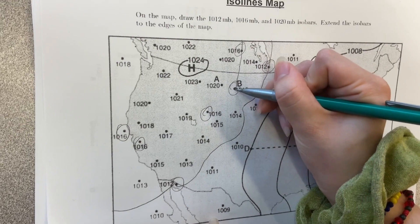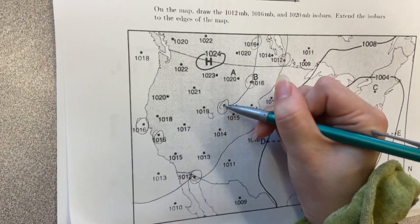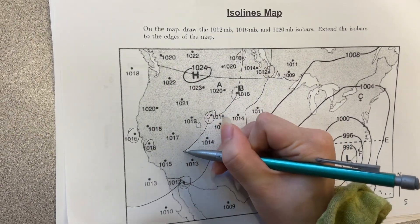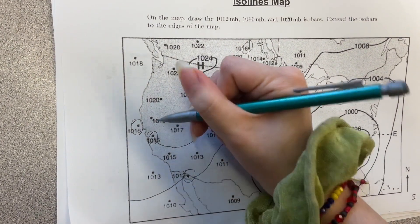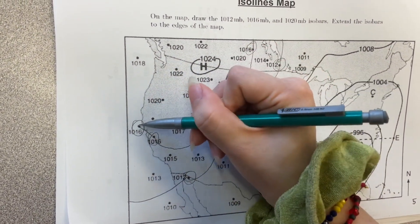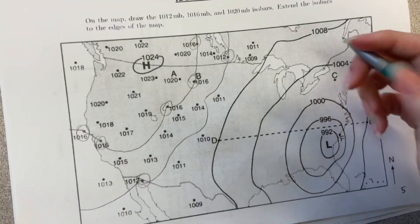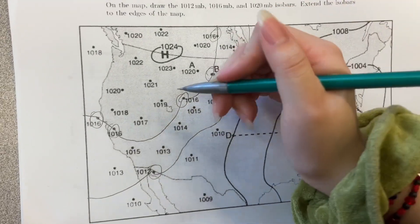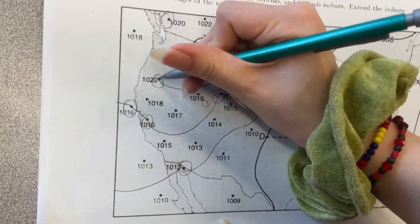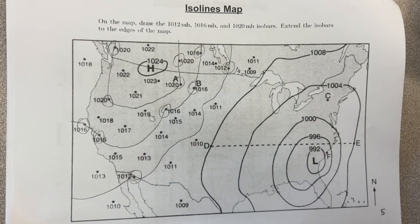And then keep connecting it to another 1016. You can move your line through here, through here, through here, and through here. So obviously you can connect them, and then connect them. And then you can go off the map, just like that, to connect it to the edge. And then finally for 1020, you do the same thing. And this is how you draw the isobar lines for an isobar map.